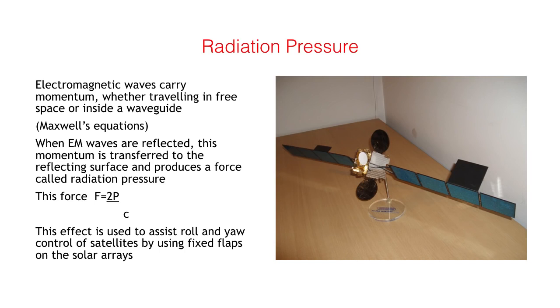The image shows a model of a large communication satellite. Radiation pressure on the fixed flaps mounted off the solar arrays provides assistance to the roll and yaw control system and reduces propellant consumption over the satellite lifetime.